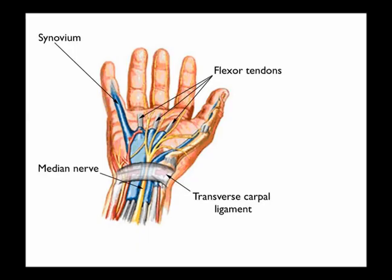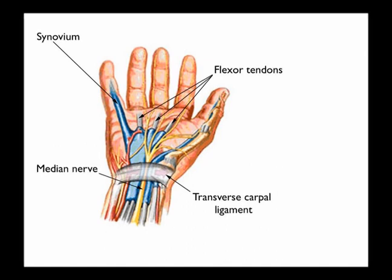Carpal tunnel syndrome is the most common nerve entrapment in the body. It is compression and traction of the median nerve in the carpal tunnel of the wrist. It is mainly due to repetitive wrist and hand motions, but can be due to trauma. Symptoms include numbness, tingling, burning, and weakness. There can also be atrophy of the muscles if the condition is long-standing.